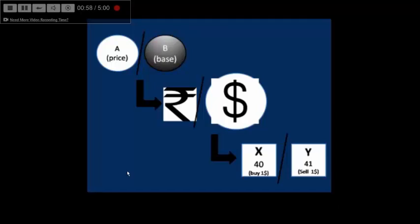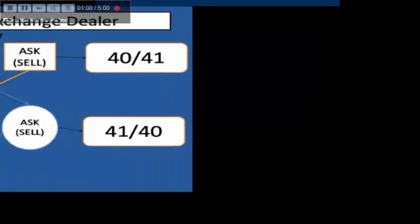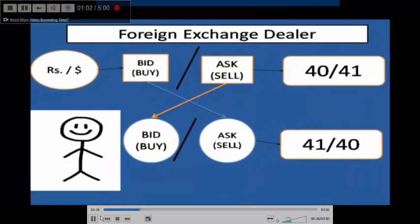In our next video we also discussed that the buying rate of the dealer becomes our selling rate, and his selling rate becomes our buying rate. So if the dollar is being sold at 41, then our buying rate will be 41.